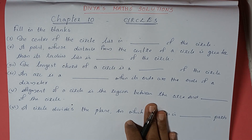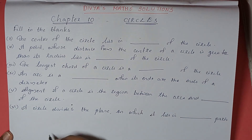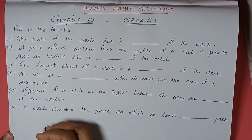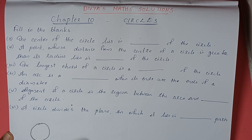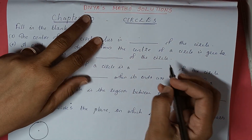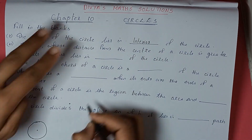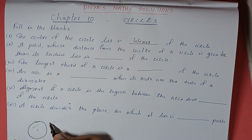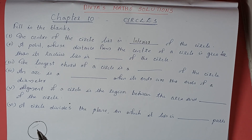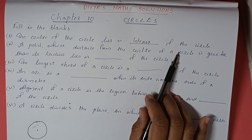First one, fill in the blanks. The center of the circle lies in dash of the circle. Here one circle is there. The center is inside, so the inside part of the circle is called what? Interior. So center of the circle lies in interior of the circle. The inside part is called interior and the outside part is called exterior.